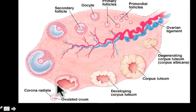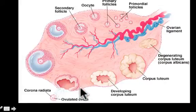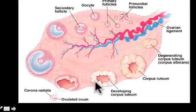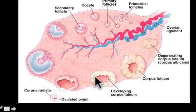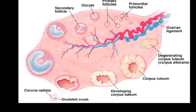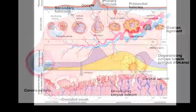Eventually, hormones cause the ovum to ovulate, leaving behind some follicle cells on the surface of the ovary. This isn't scar tissue — it's tissue that will start producing hormones. Meanwhile, the egg and its supporting cells, called the corona radiata, make their way down the fallopian tube awaiting fertilization.